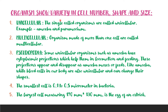Organisms show variety in cell number, shape, and size. Unicellular — the name itself means single-cell organisms. Examples are amoeba and paramecium. Multicellular organisms are those made up of more than one cell.